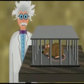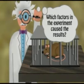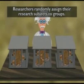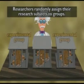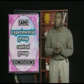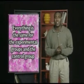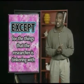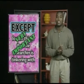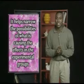When researchers do an experiment and observe the results, they want to be certain they know exactly which factors in the experiment caused the results. So here's what they do: they randomly assign their research subjects to groups — the experimental group and the control group. The experimental group and the control group are exposed to the exact same conditions, except the experimental group is exposed to manipulation of the independent variable. Everything is the same, except for the things that the researcher is tinkering with, because the researcher wants to know precisely what is causing the results.